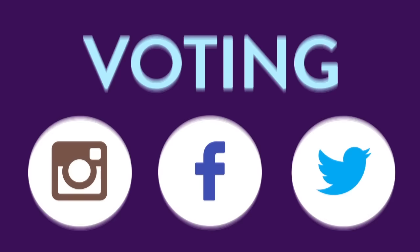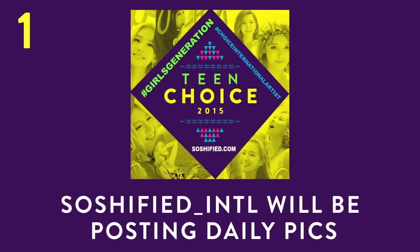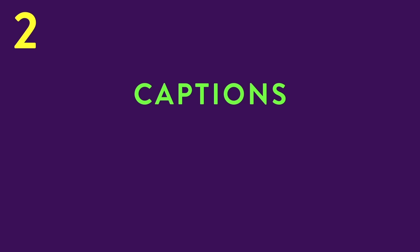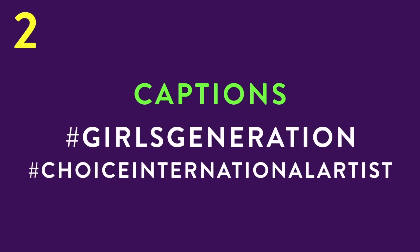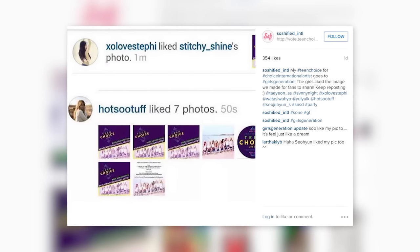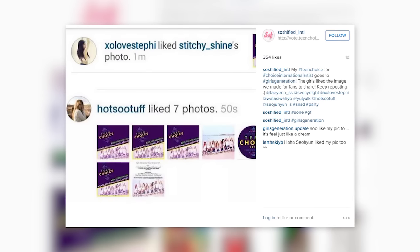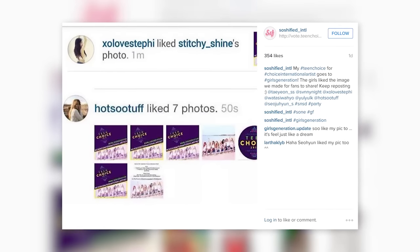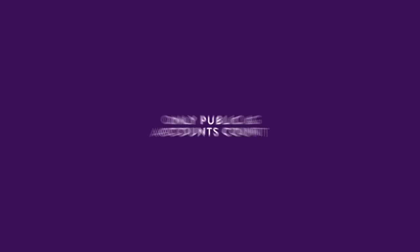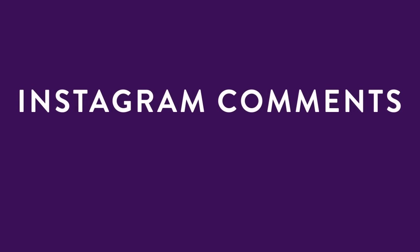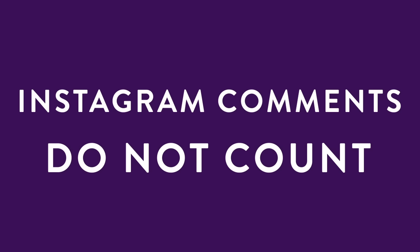Voting can be done through three different social media platforms: Instagram, Facebook, and Twitter. For Instagram, fans need to: 1. post a picture of Girls' Generation, 2. caption the post with the hashtags Girls' Generation and Choice International Artists within it. For example, 'My teen choice for Choice International Artists is Girls' Generation.' Note that votes made by only public Instagram accounts will be counted, and Instagram comments do not count as votes.